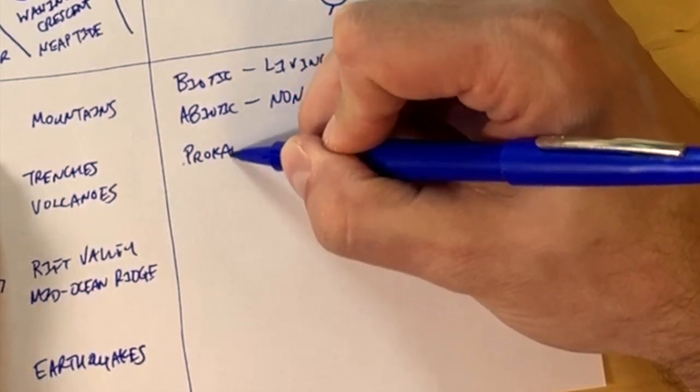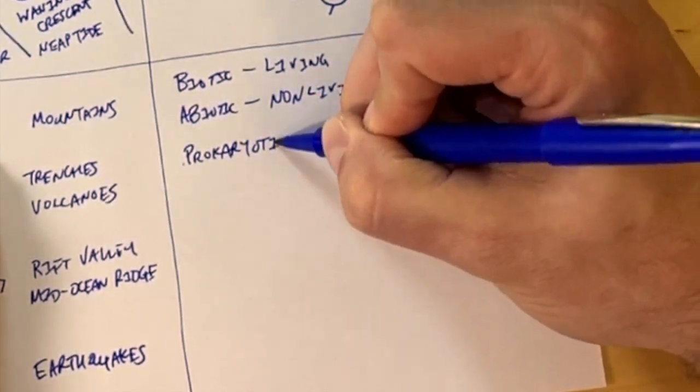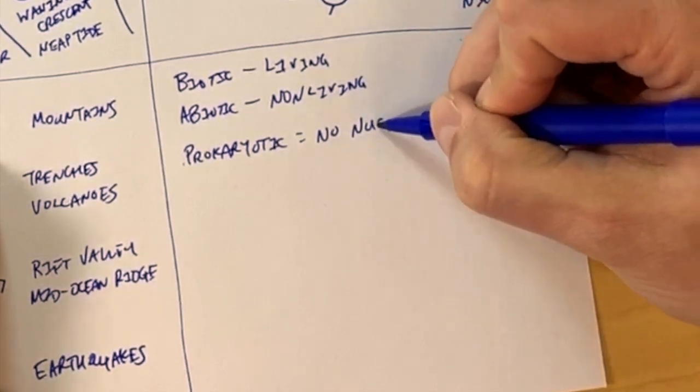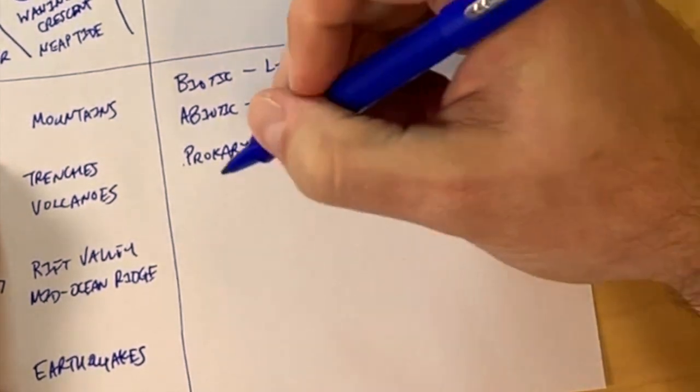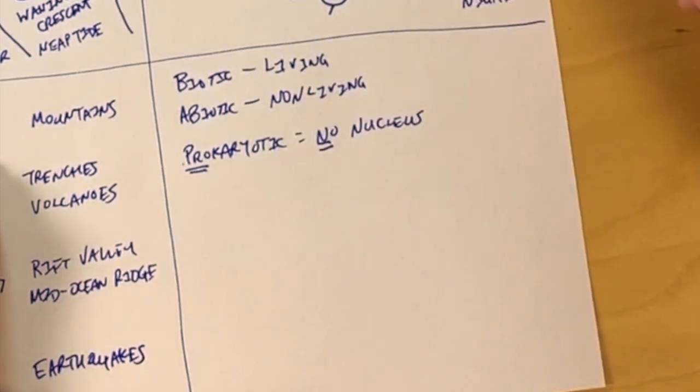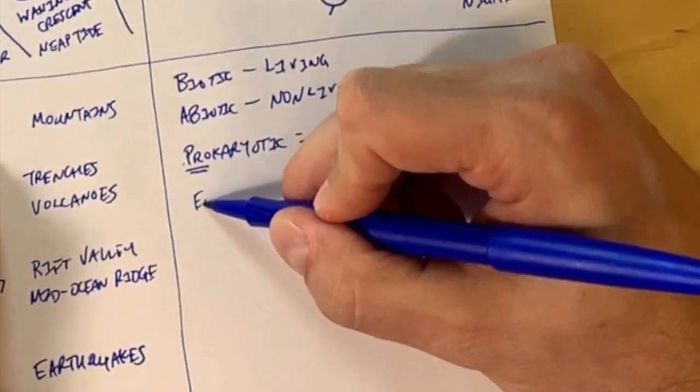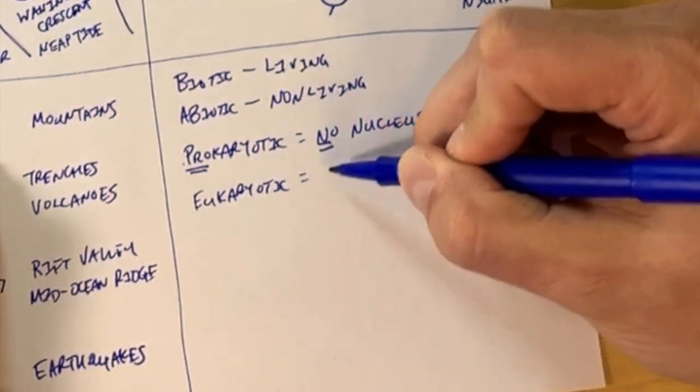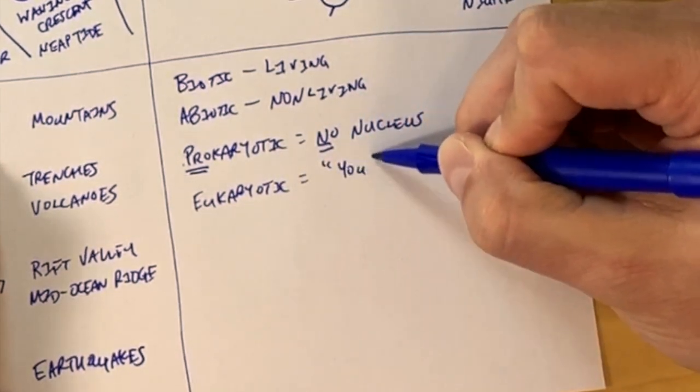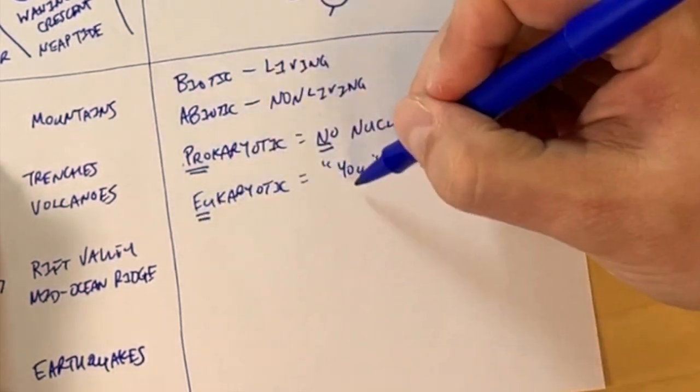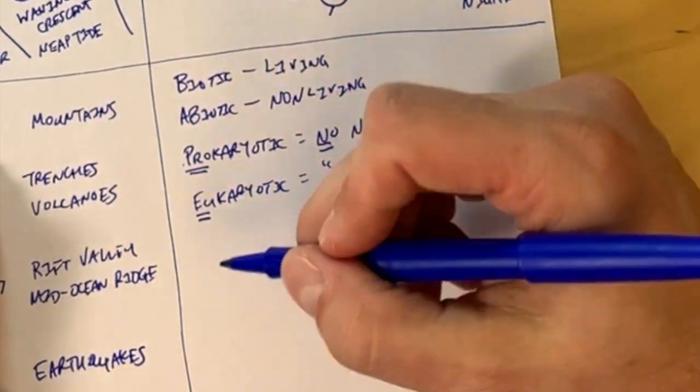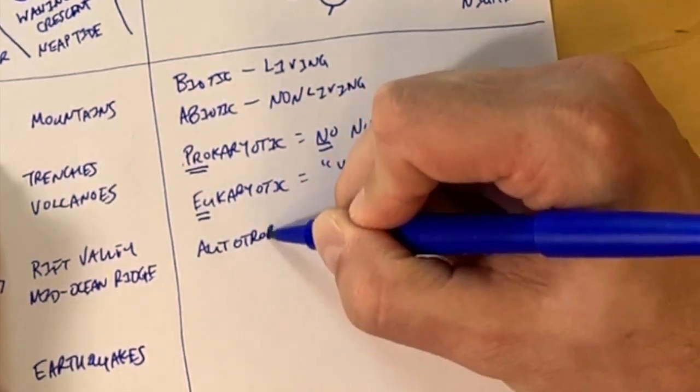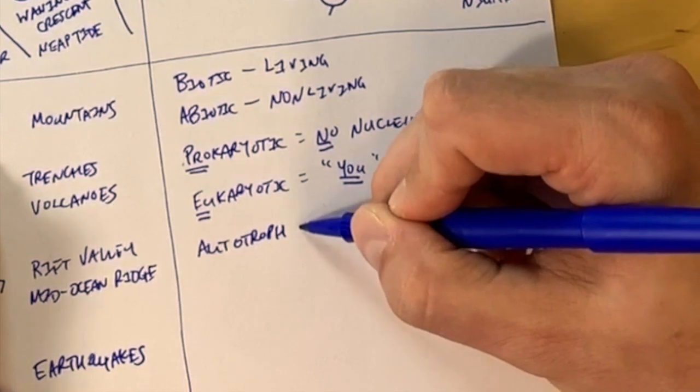And then we're going to look at the words prokaryotic. Prokaryotic cells have no nucleus in them. And then eukaryotic cells are cells with a nucleus that has DNA inside. The way you remember this is pro, no, and then you, you, because you're made up of eukaryotic cells.